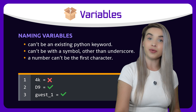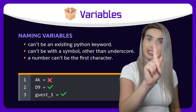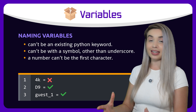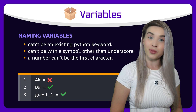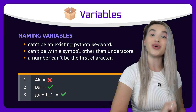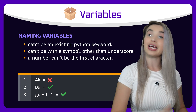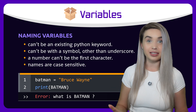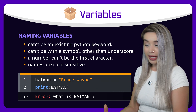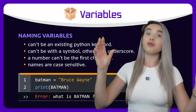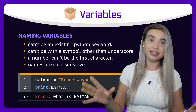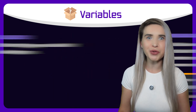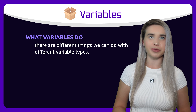Also, you can use numbers, just not as the first character. So '4k' is not going to work, but 'd9' will. And finally, Python is case-sensitive, so 'batman' is not the same as 'Batman'! Okay, but what are we supposed to do with these variables?